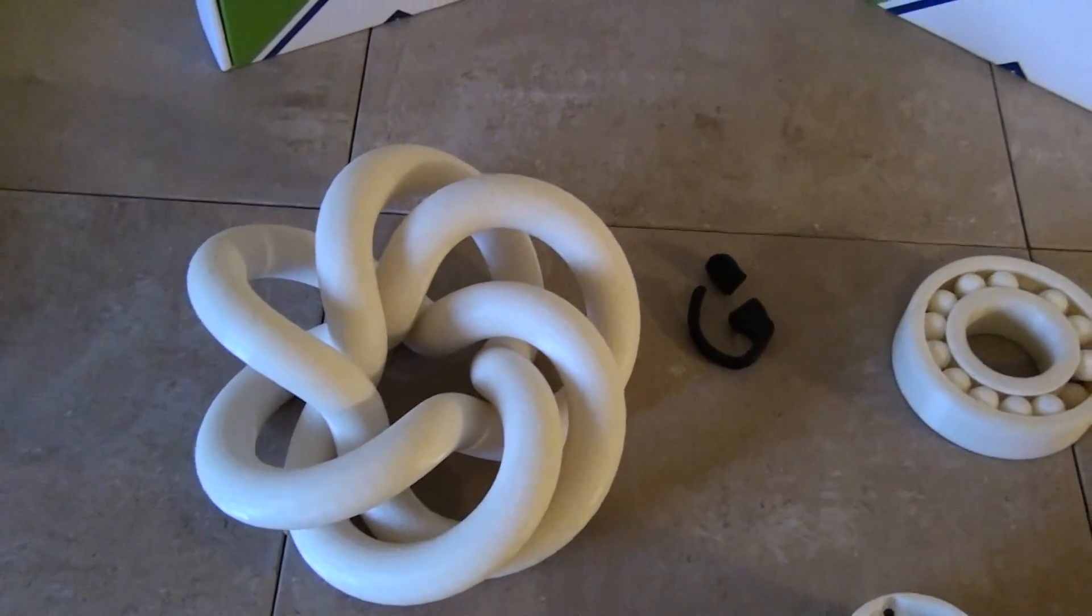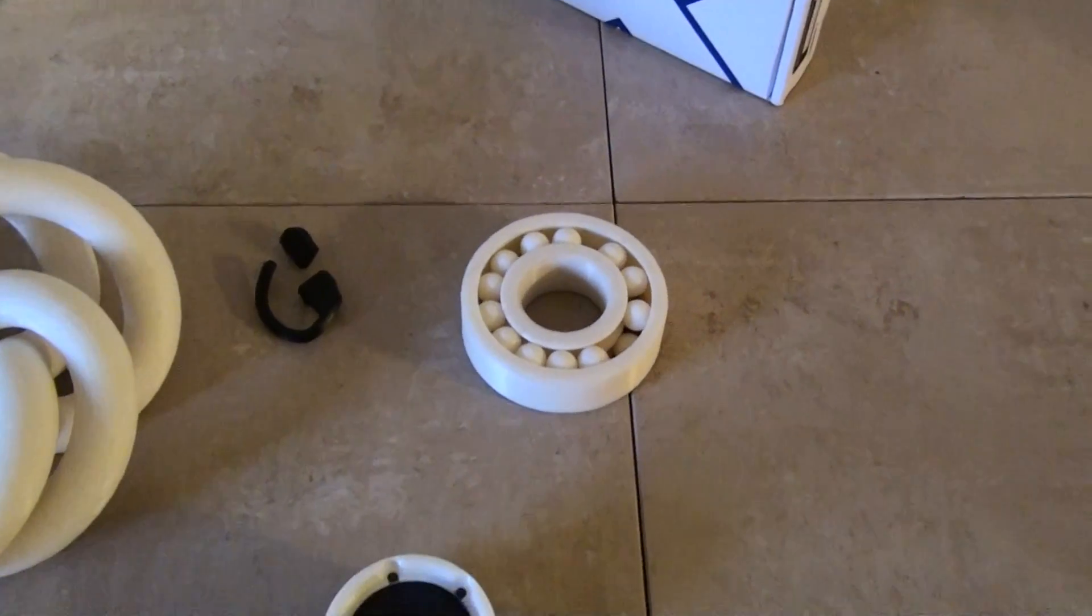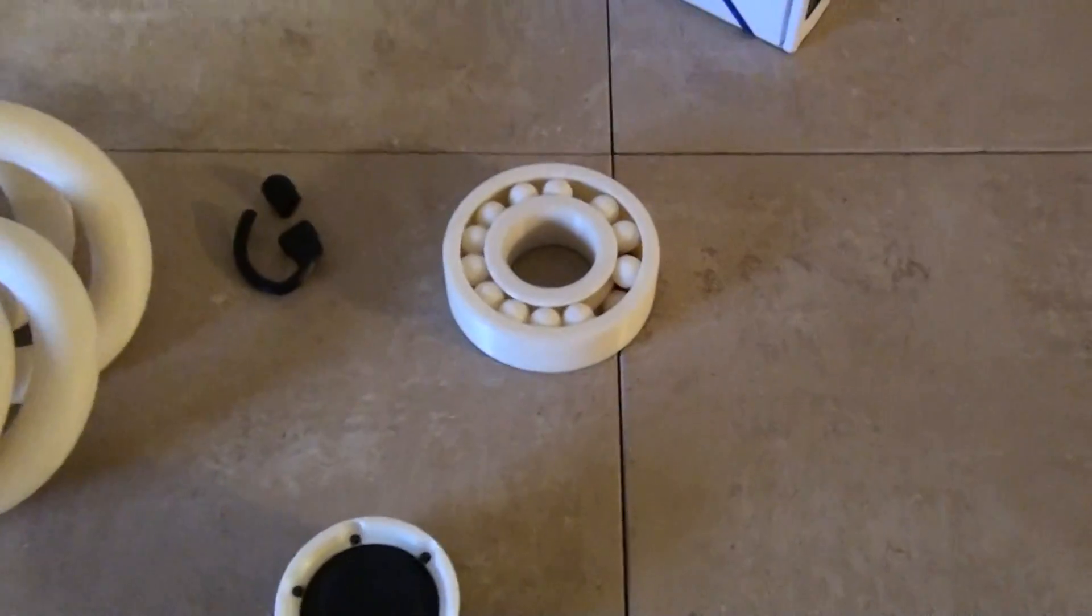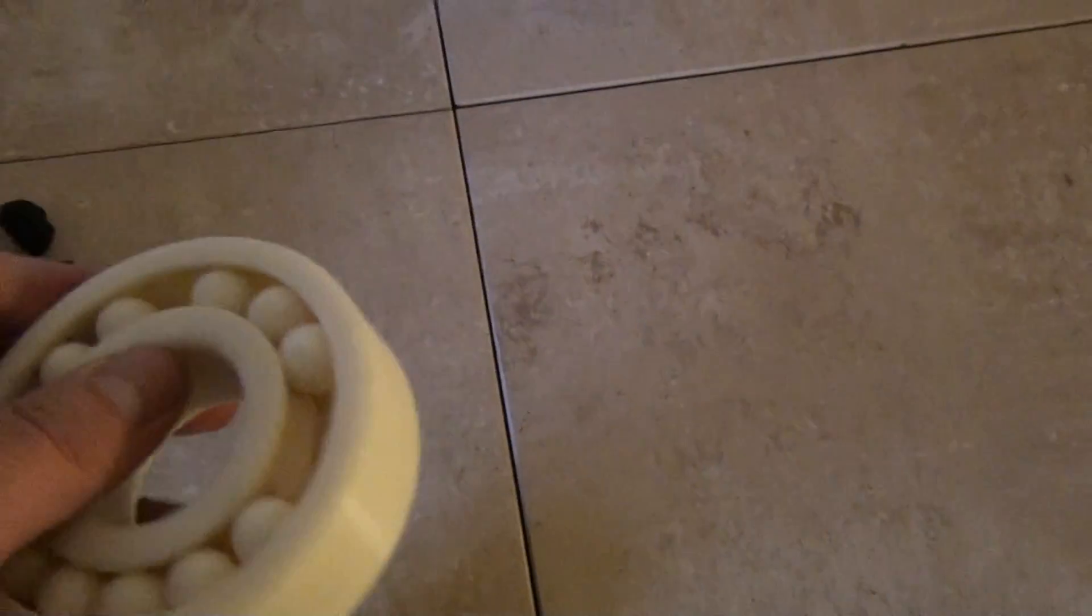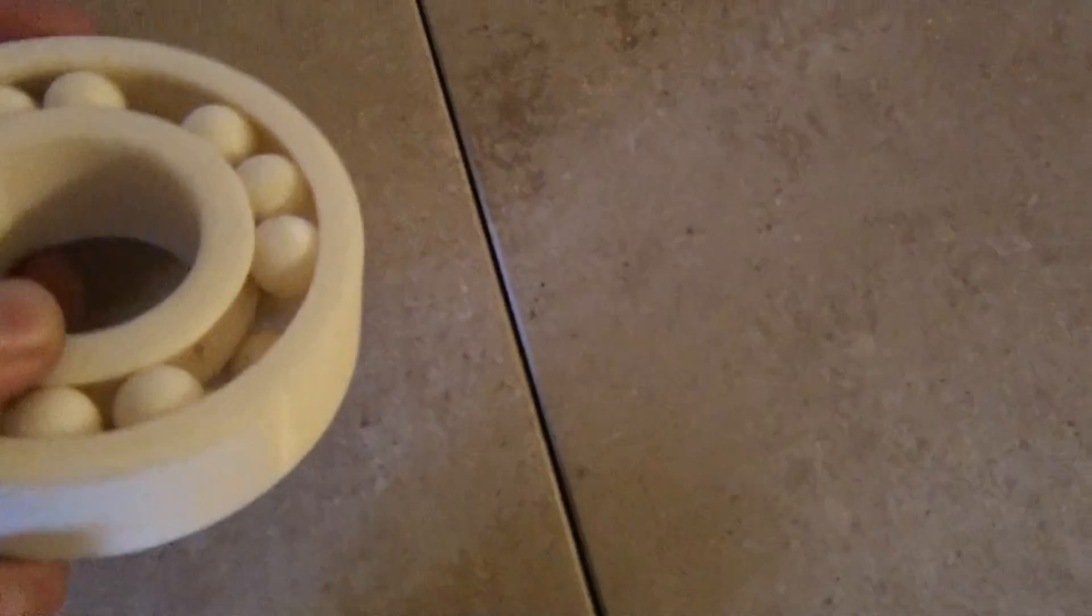Look at the detail, this is printed with support material. Once the support material is taken out, you actually have a working spinning ball bearing. It actually spins right out of the machine.